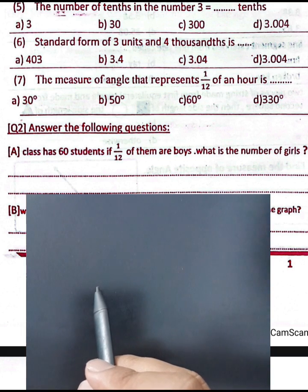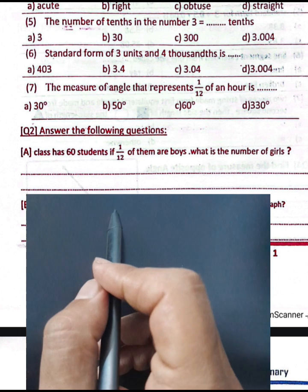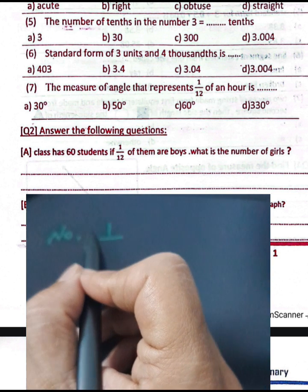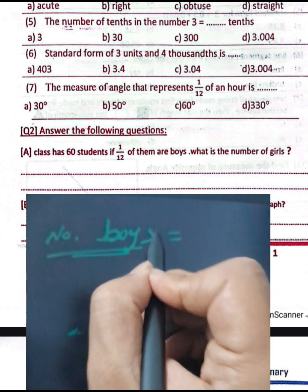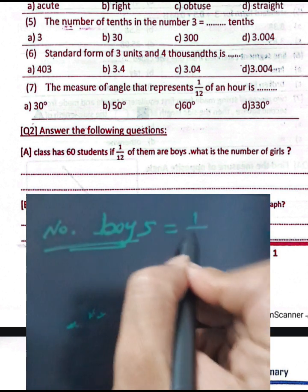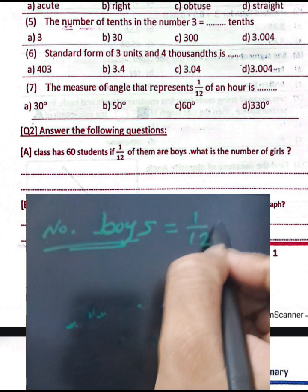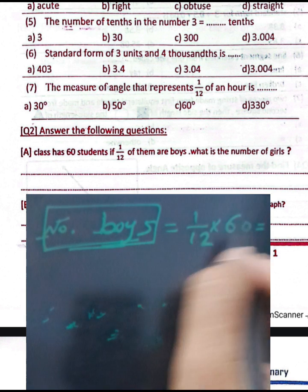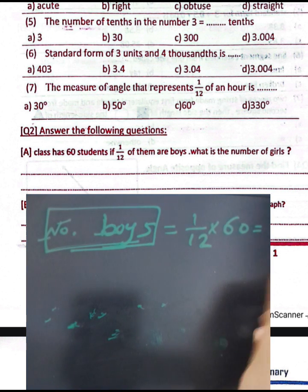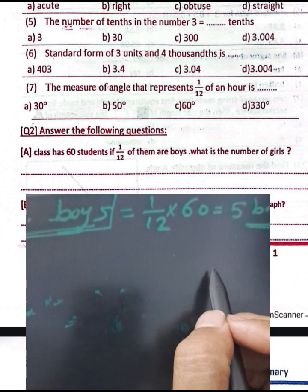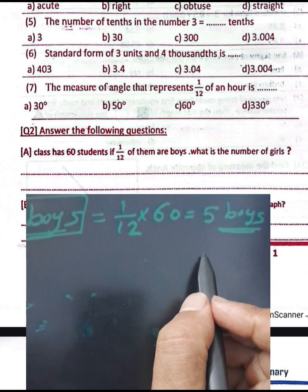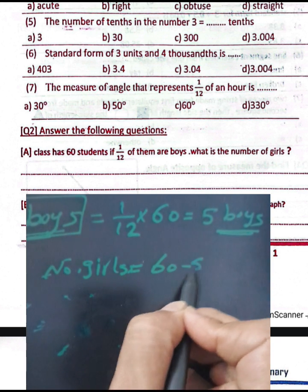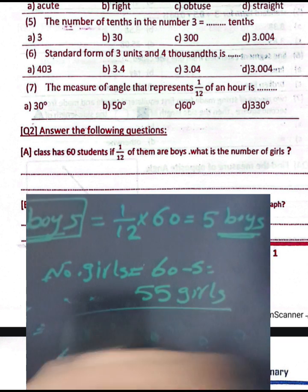Question number two, answer the following: a class has 60 students. If one over 12 of them are boys, then the number of girls equals what? First, find the number of boys: one over 12 multiplied by 60 equals 5 boys. Then the number of girls equals 60 minus 5, which equals 55 girls.